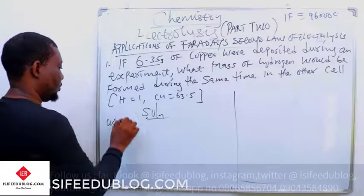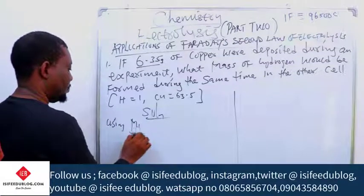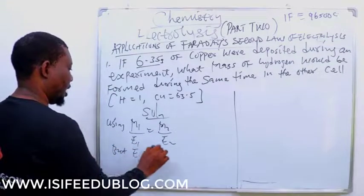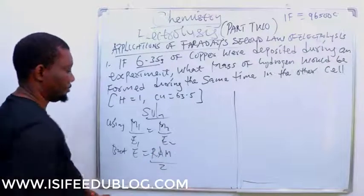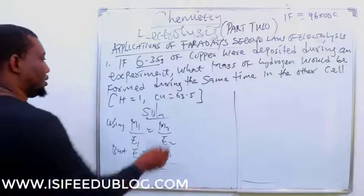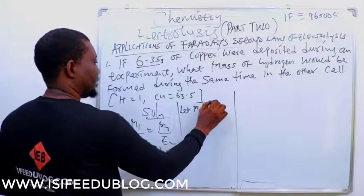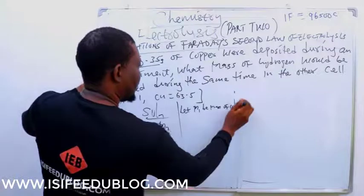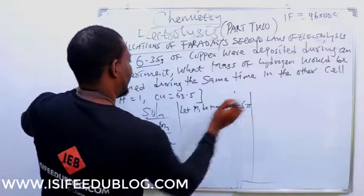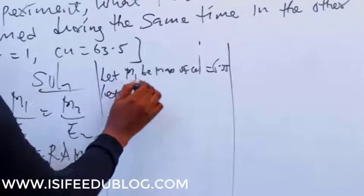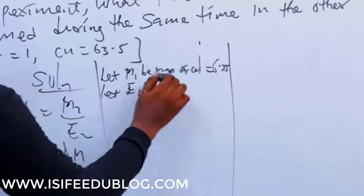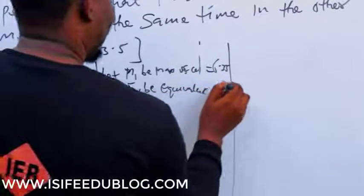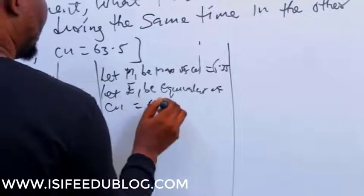So we're going to use our second law equation which is M1 over E1 equals to M2 over E2. But E1 is RAM over Z. Let M1 be mass of copper and let E1 be the chemical equivalence of copper.